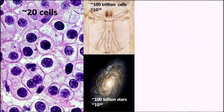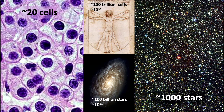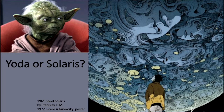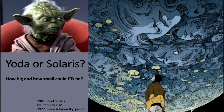Let's look more carefully at the cells of a person — here's what skin cells look like. And let's look more carefully at the stars of a galaxy — here's what they look like. Interesting pieces of a larger whole. We're trying to answer: how big or how small could extraterrestrials be?